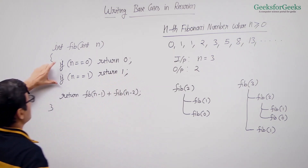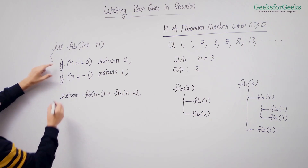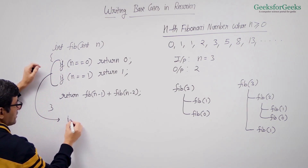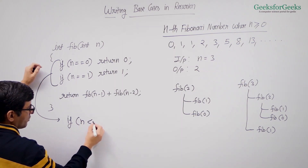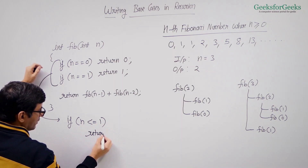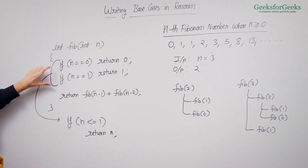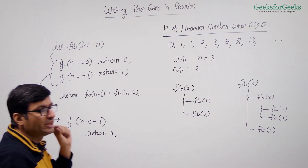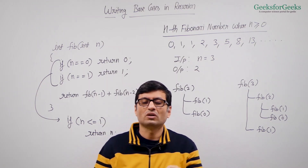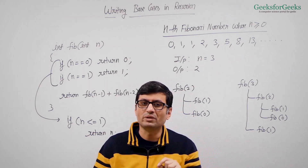Although we can combine these two base cases: if n is less than or equal to 1, return n. That is a shortcut for writing both base cases. But we must handle n equal to 0 and n equal to 1 — otherwise we will be in trouble.